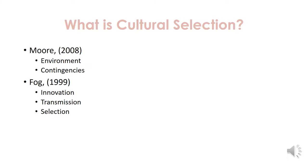Not only do we have to find the answers to problems that are happening, but we also have to actually practice transmitting the practices to the group members. Essentially what Moore is saying is that you have to solve a problem that is occurring, and not only do you have to solve that problem, but you have to find a way to transmit these practices to the members of the group in order for these changes to occur.